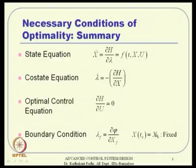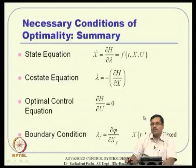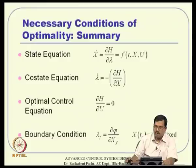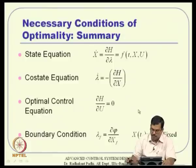The problem here is we have split boundary conditions: half the conditions are known at initial time, while half are known only at final time. This leads to the two-point boundary value problem, which is difficult to solve in closed form and also computationally intensive numerically. We have seen two or three numerical procedures in the last class, which give a feeling of how to solve these problems as an offline solution.